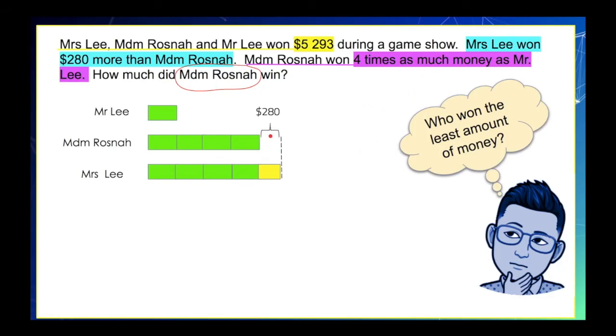So, these symbols clearly show that we are comparing two quantities here, Madam Rosnah's and Mrs. Lee's winnings. Next step, let's look at this first statement. The three persons here won $5,293. And this can be included in our model by drawing this brace with the label like this.